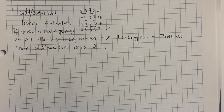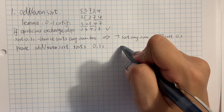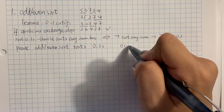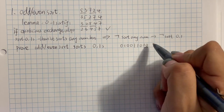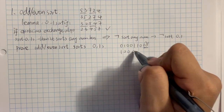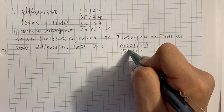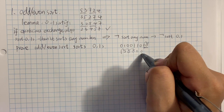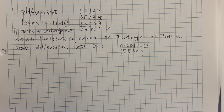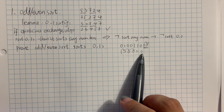Now we are going to prove that odd-even sort sorts zeros and ones. First, we make some observations. If you have a bunch of zeros and ones, in the first iteration, you will see that this one will be switched to this position. So if we have a bunch of zeros here, then the one will swap, swap, swap until it goes to the end. So for any one, it will be switched until it reaches the last position or it reaches another one.